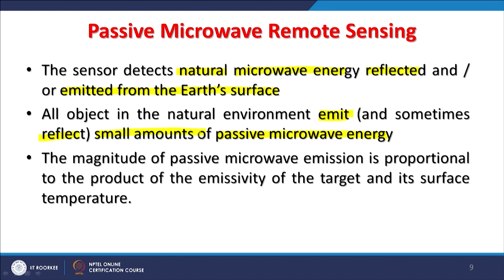The magnitude of passive microwave emission is basically proportional to the product of the emissivity of the target and its surface temperature. Recall Wien's displacement law and other radiation laws discussed previously — the emission depends on and is proportional to the product of the emissivity of the target and its temperature.